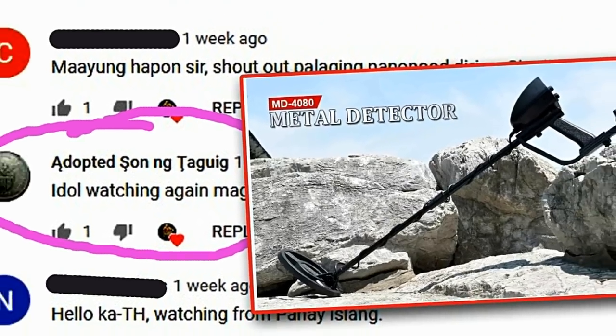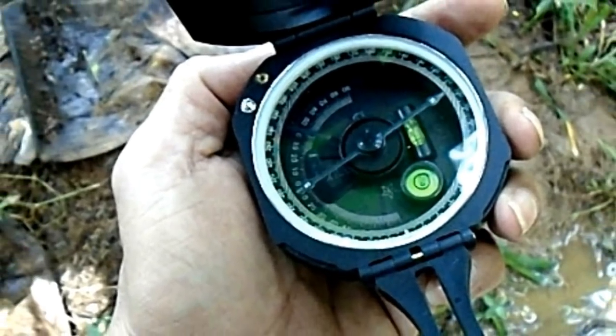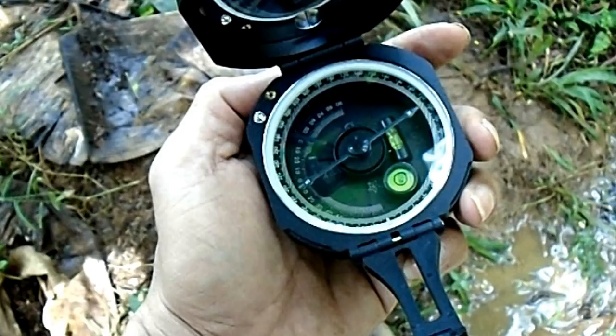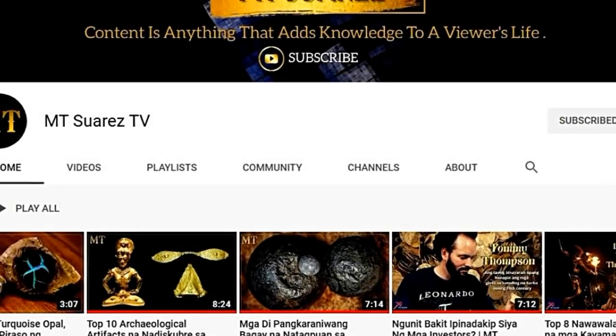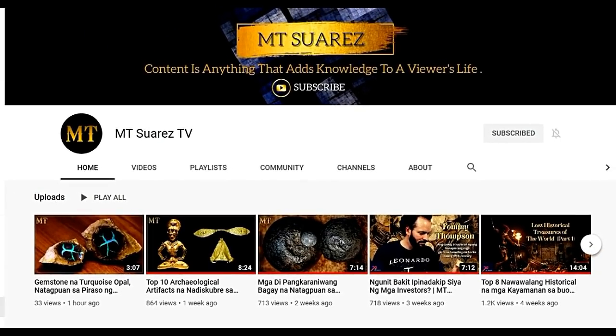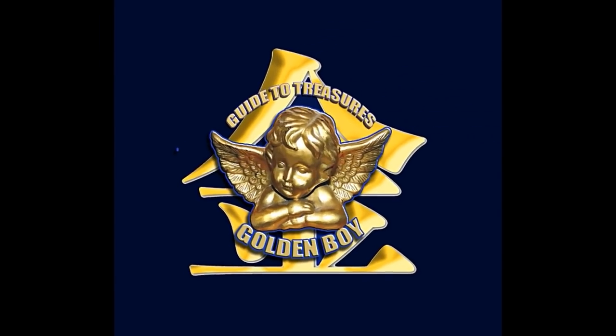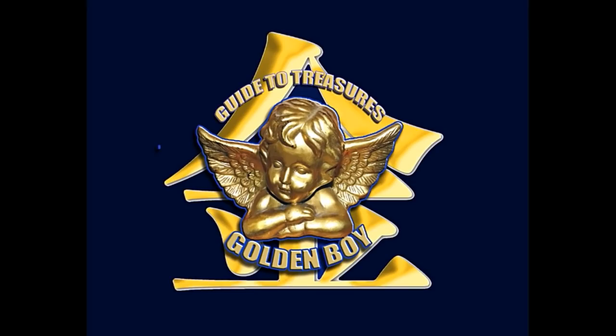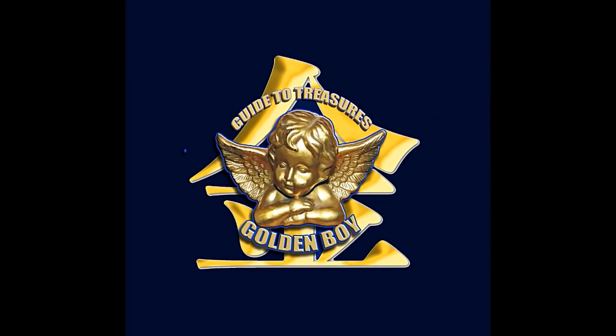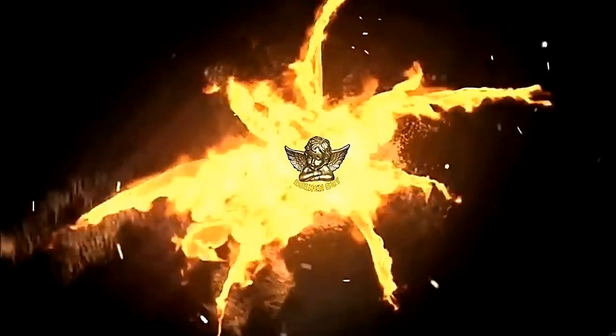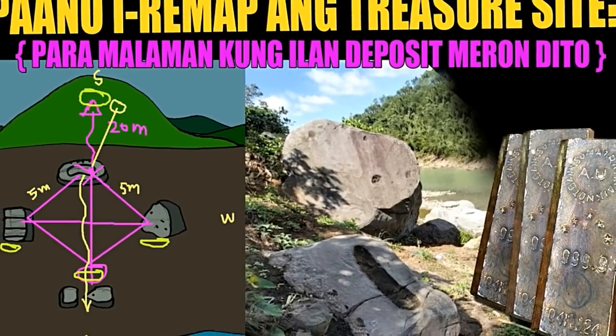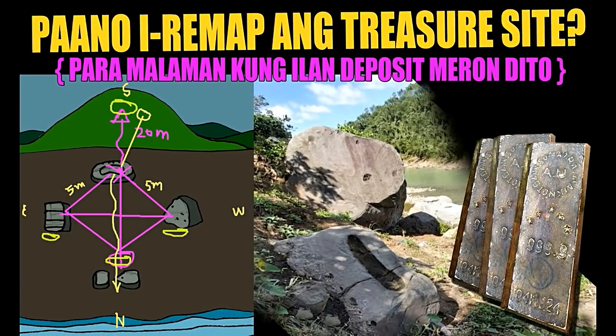Our third raffle draw is coming in a couple months. We have three beautiful magnetic compasses as prizes that you can use for remapping treasure sites. Just subscribe to MT Suarez TV and my late father's channel The Golden Boy Real Guide to Treasure. Now let's discuss the treasure decoding for these treasure signs and symbols sent to us.